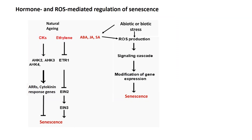Now we come to the regulation of senescence. First, we will see how plant hormones play a role in the regulation of senescence. Several plant hormones like ethylene, jasmonic acid, abscisic acid and salicylic acid promote leaf senescence, whereas cytokinin, auxins and gibberellins delay this process. Of these, cytokinin and ethylene biosynthesis and signaling have been shown to play an important role in all phases of senescence, and the mechanisms by which they do so have been well studied. Cytokinins are known to be negative regulators of senescence.